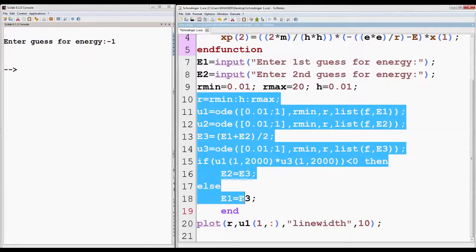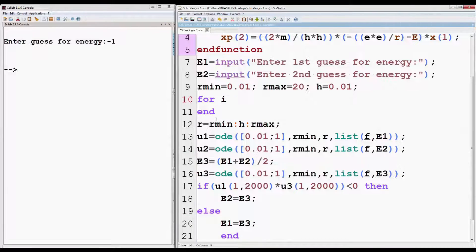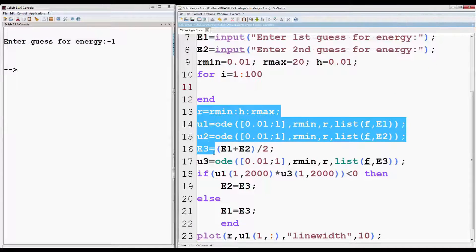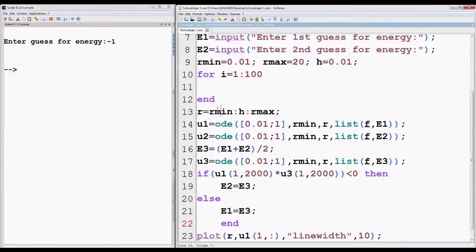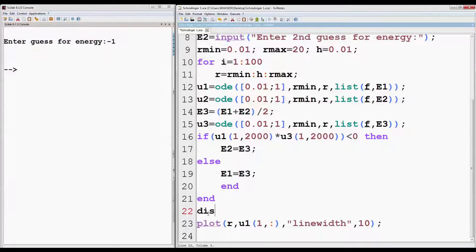Now these highlighted statements should be executed several times using a loop to get the final result. To set the loop, for or do while anything can be used, but here we are going to use for loop. Do while condition will be used in our next video. We are going to run the loop for say 100 times from 1 to 100 using i variable. Put the selected statements within for loop except plot because we don't want to plot 100 times. We will only plot once after getting the final result. Finally display the eigenvalue using disp function.